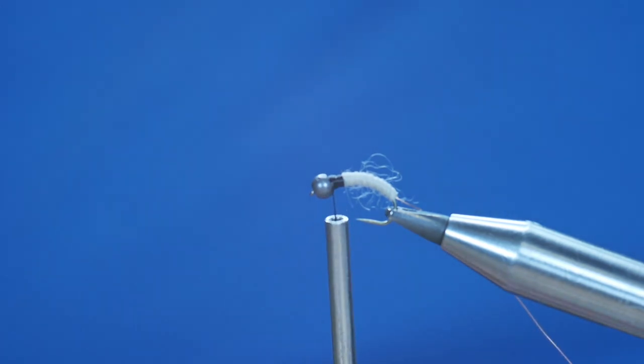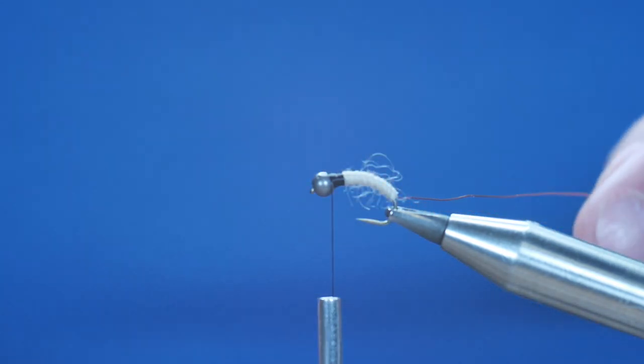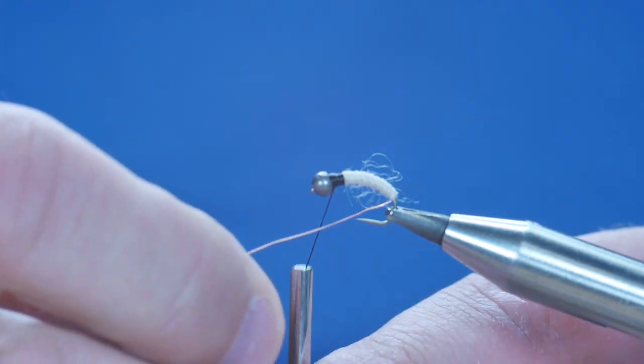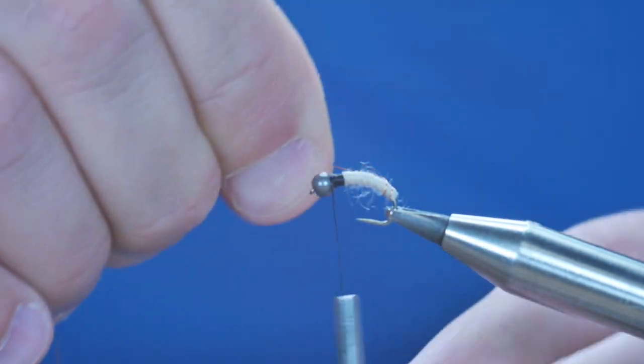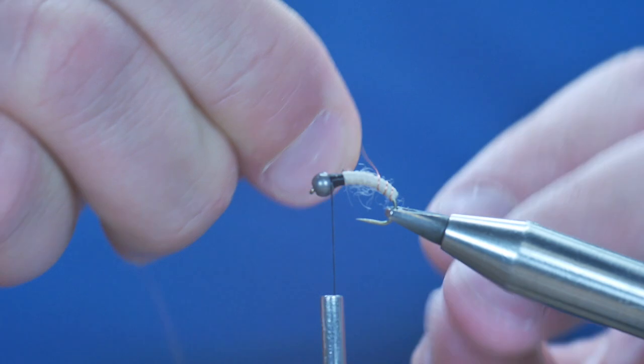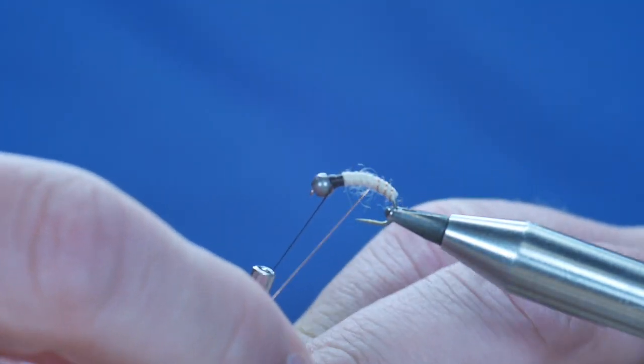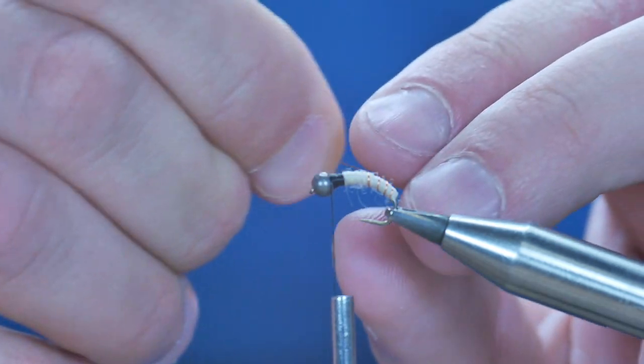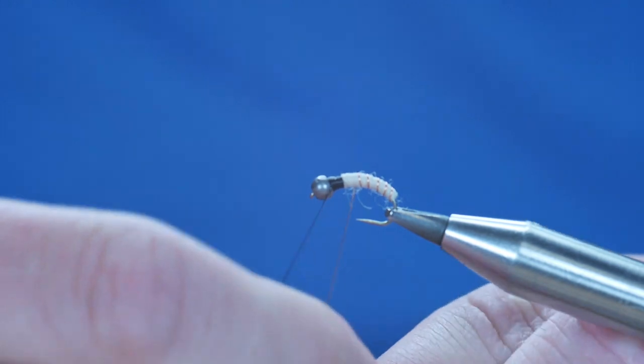So I just want to make sure that I've got a good base for that to come on. So before I do anything with the thorax, I'm going to bring my rib up, nice even turns all the way up the fly. Try not to catch it on the point of your hook. It's unlikely, but it can snap.